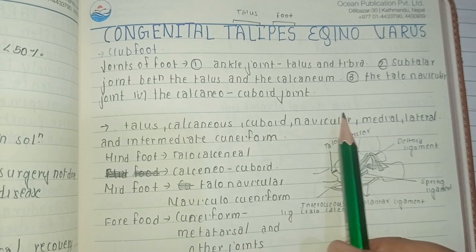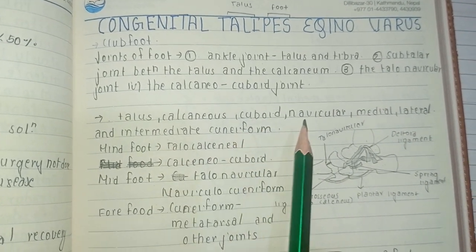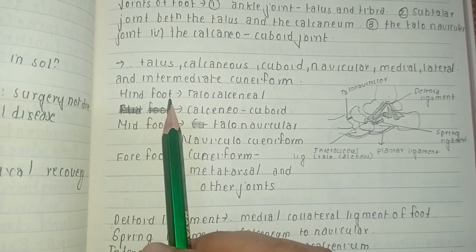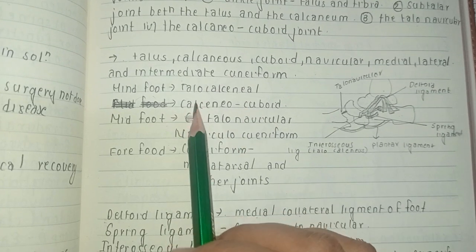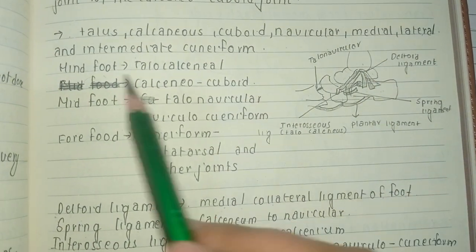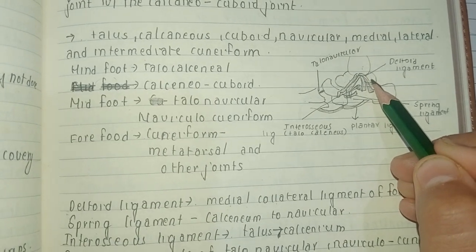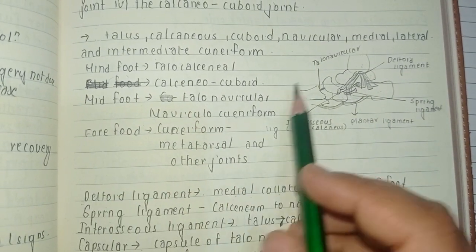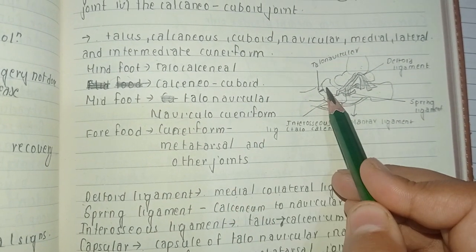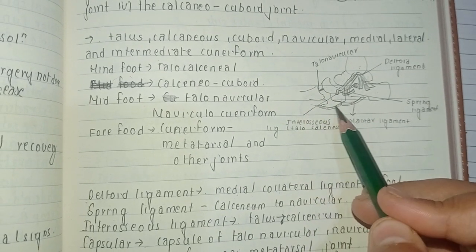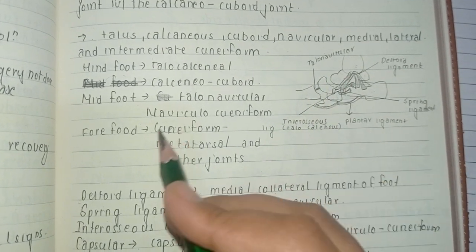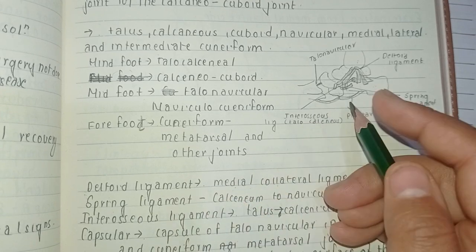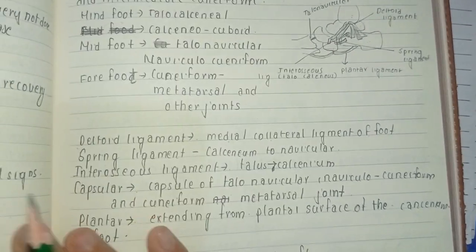The bones present in the foot are: talus, calcaneus, cuboid, navicular, medial, lateral and intermediate cuneiform, then metatarsals and tarsals. The hind foot consists of the talocalcaneal and calcaneocuboid joint. The mid foot is formed by the talonavicular and naviculocuneiform joint. The cuneiform-metatarsal and interphalangeal joints form the forefoot.